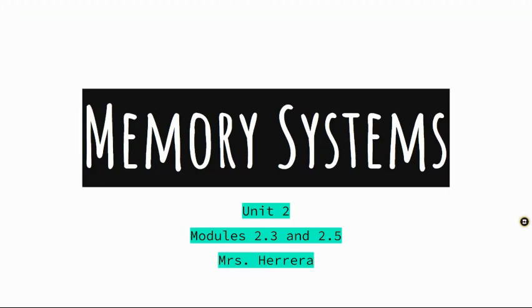We are officially starting Unit 2, and Unit 2 is going to start with Modules 2.3 and 2.5. We're going to focus in this video lecture on the memory systems — what is the process of getting information from the outside world into our brain, what do we do when we get it in there, where does it go, how do we eventually get it back? Our focus today is going to be on the overarching principles of what happens in this memory system process.